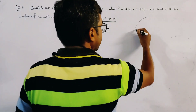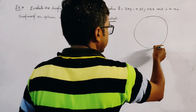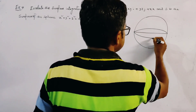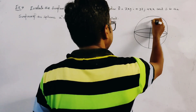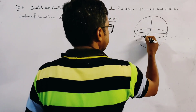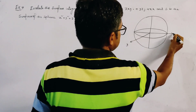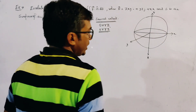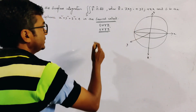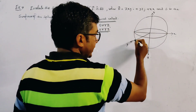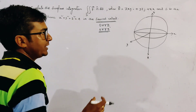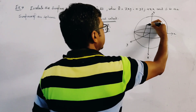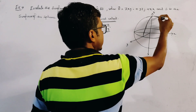If we draw a rough sketch of the sphere, this is the sphere and this is the intersection through the center. This is the Z axis, this is the Y axis — positive direction of Y axis, positive direction of X axis, positive direction of Z axis, and this is the negative direction of Z axis. We have to take the second octant, that is (O, X, Y, Z').